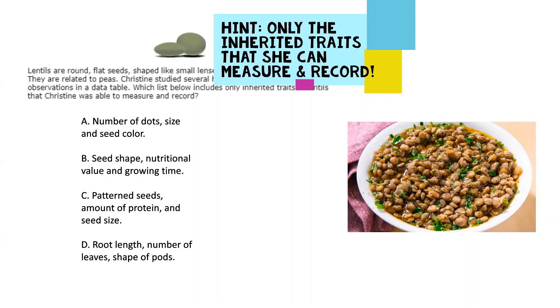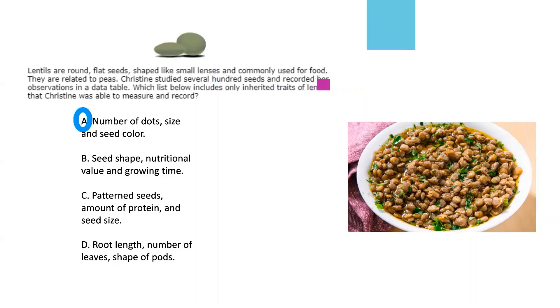Okay and we're back. If you said A — number of dots, size, and seed color — you're absolutely correct. Let's continue.